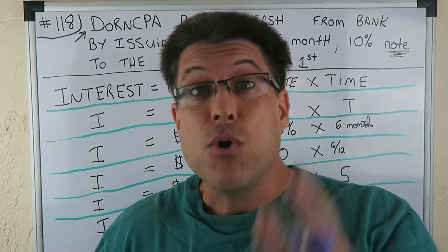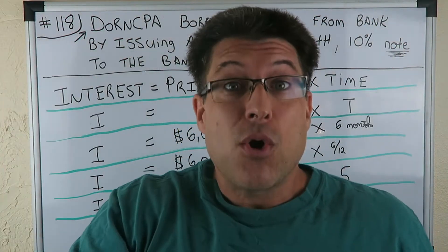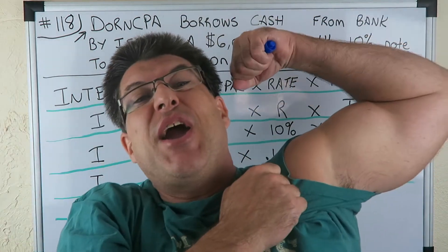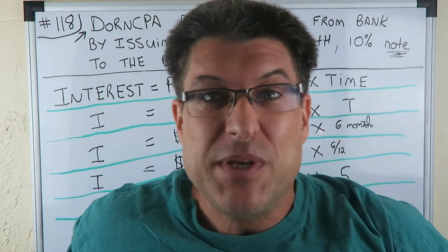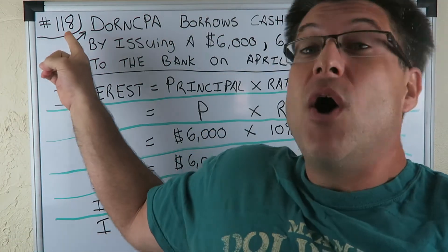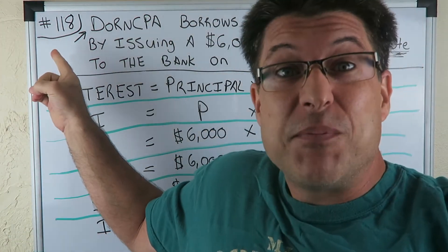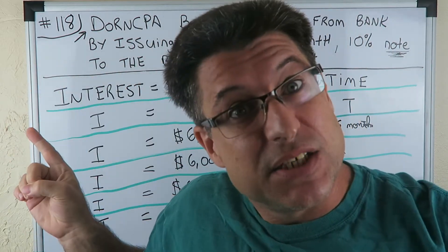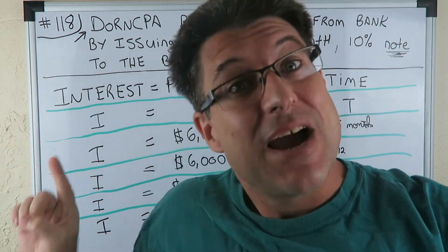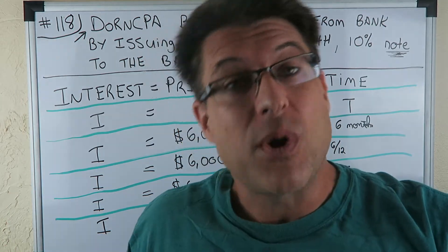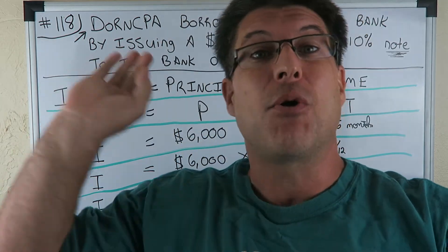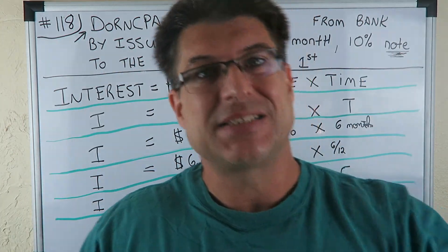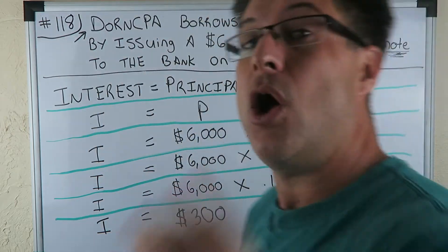Yo yo yo, CPA Strength here. Strongest in the game. We's back baby. We're doing Accounting for Beginners 118. This is my classic series. This is a follow-up to 117 where we recorded a note payable. Now we're going to figure out the interest on this.